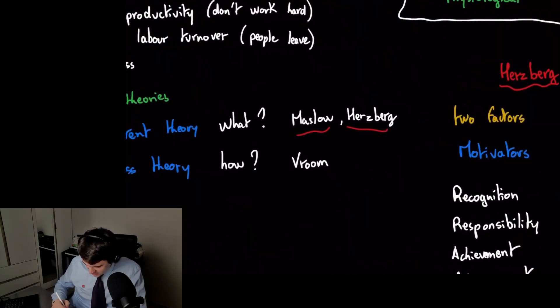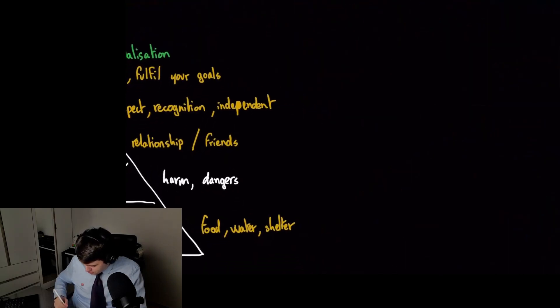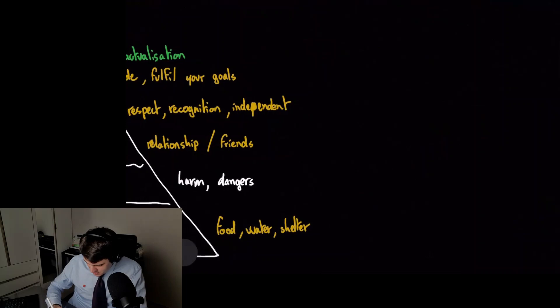So this was the what, Maslow and Herzberg. Now let's go to the process theory, how to motivate people. We're going to look at Vroom. Vroom is a formula.